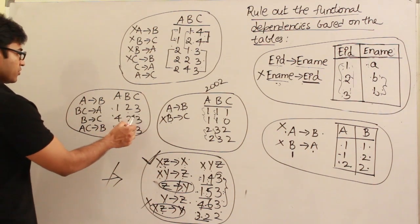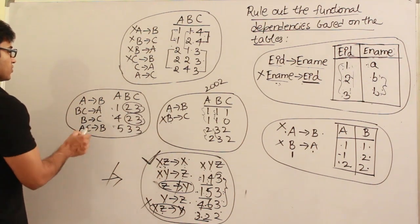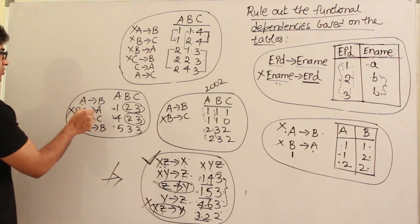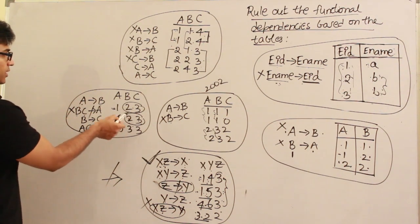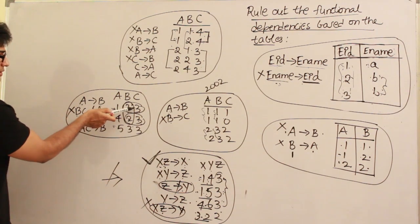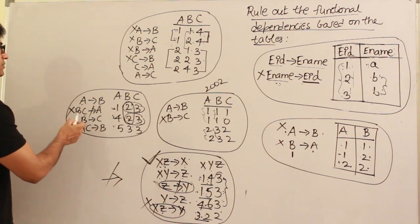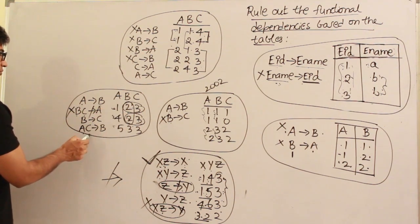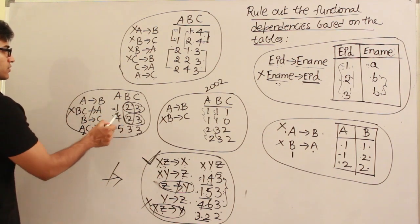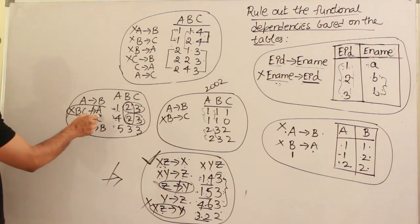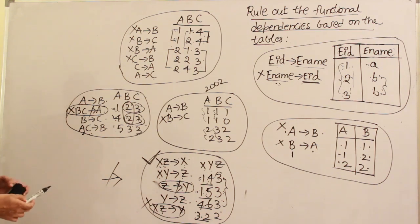BC→A: check combinations of B,C — 2,3 appears twice, and for BC=2,3, A takes values 1 and 4 — that's a violation, so BC→A is ruled out. B→C: B values repeat; when B=2, C is 3 both times — it seems to hold, but I'm not sure. AC→B: check AC combinations — 1,3 / 4,3 / 5,3 — all unique, so there is no possible violation. As far as this table is concerned, only BC→A is ruled out; all other FDs hold as of now, but without requirement analysis we cannot be certain.